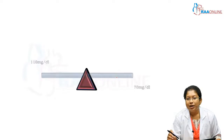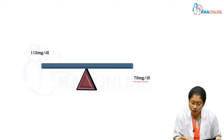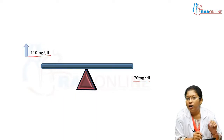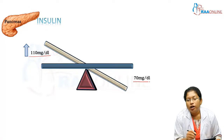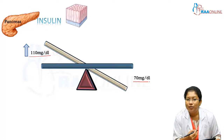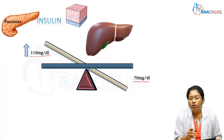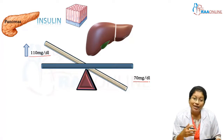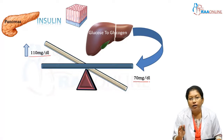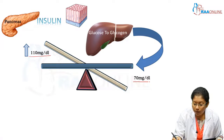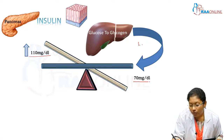In this slide, we'll see how glucose levels are maintained in the blood. The normal range is 70 to 110 milligrams per deciliter. If there is a rise in blood glucose level, the pancreas releases insulin. Insulin stimulates glucose entry into the cell, so glucose uptake by cells is increased. This glucose is utilized for energy, and when there is excess glucose, it is converted to glycogen and stored in the liver, bringing the level back to normal.